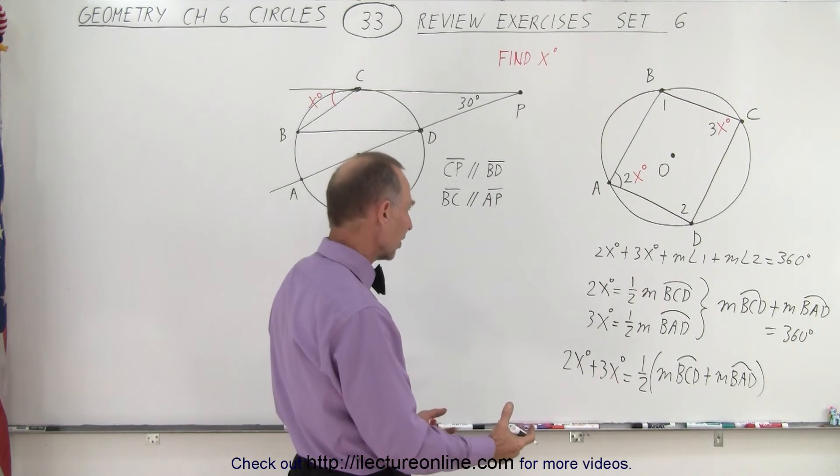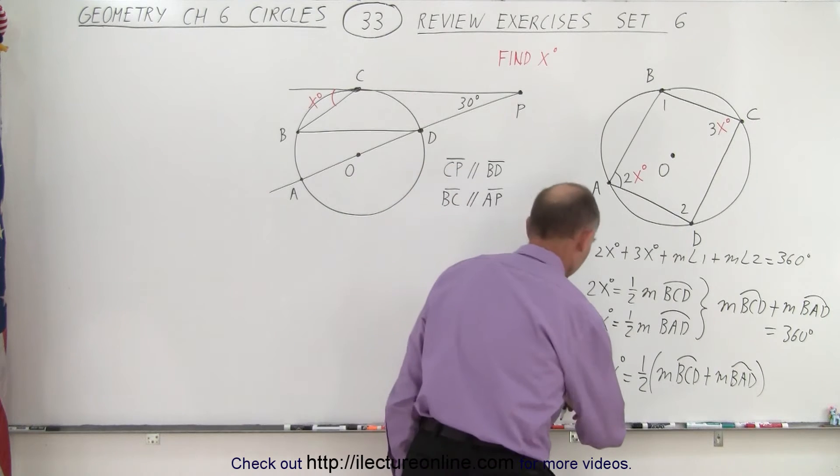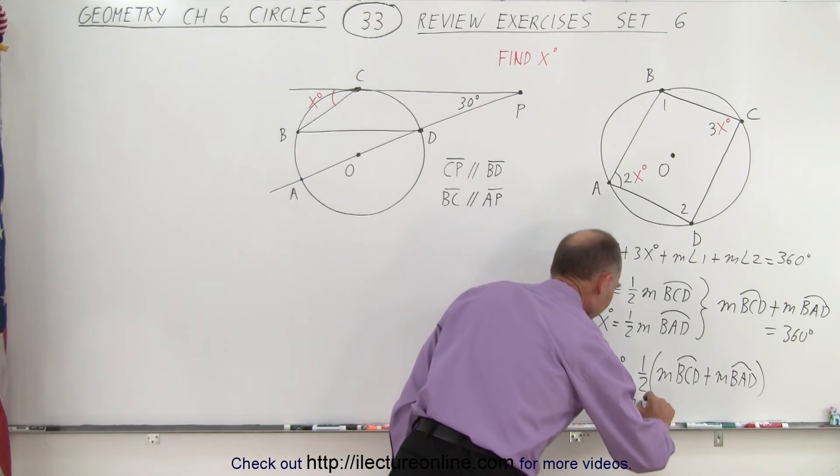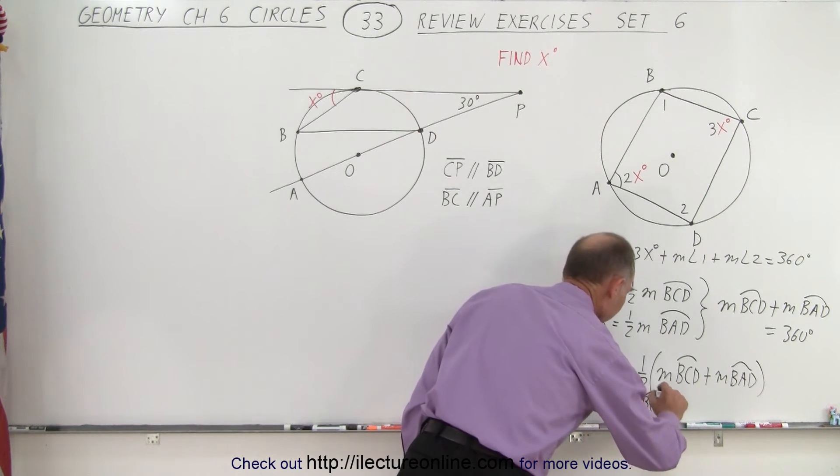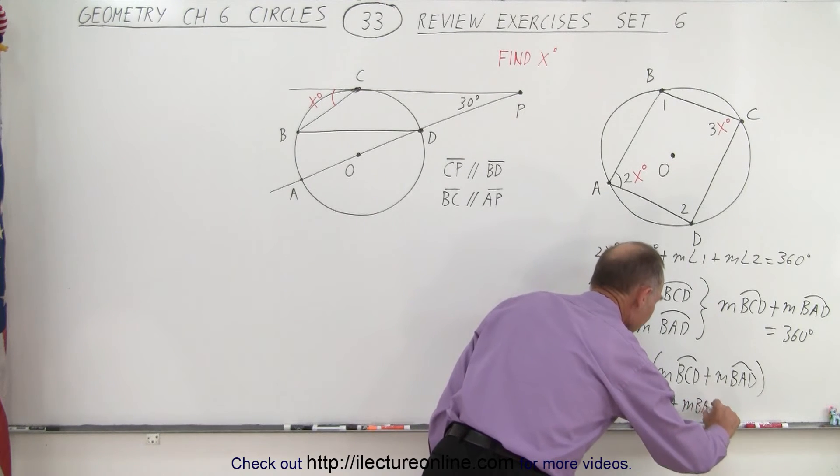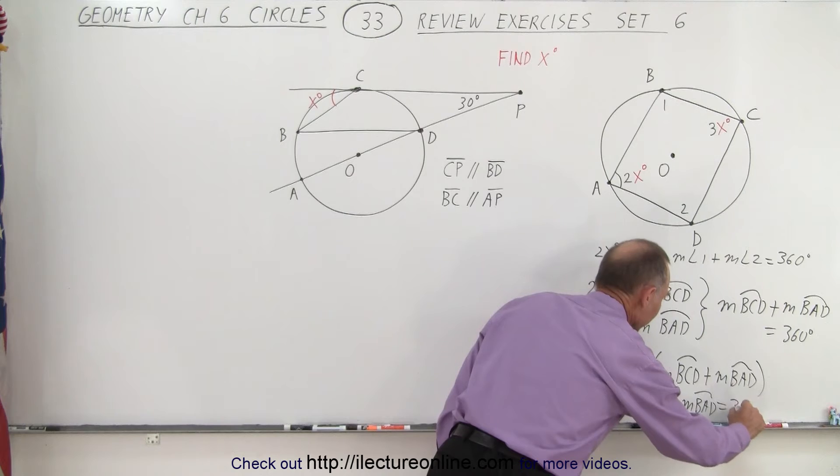And then if we multiply both sides by 2, we get 2x plus 3x times 2 or 2 times 5x degrees must equal the measure of B, C, D plus the measure of B, A, D, which is equal to 360 degrees.